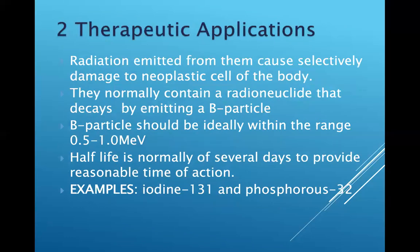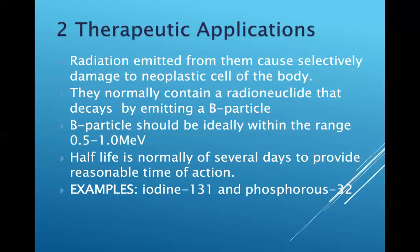For therapeutic applications, radiation emitted from radiopharmaceuticals selectively damages neoplastic cells of the body — cancer cells. They normally contain a radionuclide that decays by emitting a beta particle. The beta particle energy should ideally be within the range of 0.5 to 1 MeV. The half-life is normally several days to provide a reasonable time of action. Examples are Iodine-131 and Phosphorus-32.